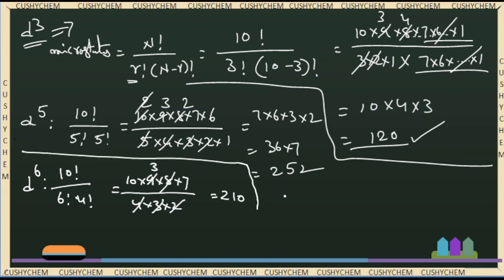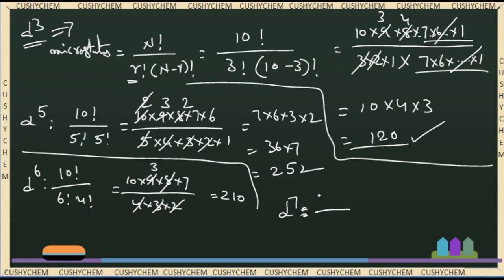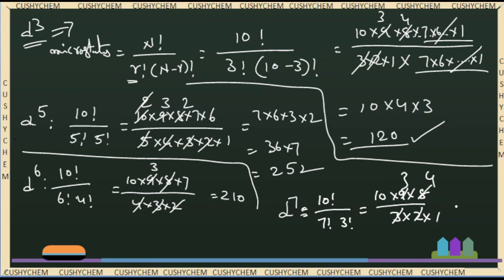For d7, we calculate: 10! / (7! × (10 − 7)!) = 10! / (7! × 3!). This gives 10 × 9 × 8 divided by 3 × 2 × 1. Simplifying: 3s cancel, 4s give 12, and 10 × 12 = 120. So my answers are: d3 = 120 microstates, d5 = 252, d6 = 210, d7 = 120.